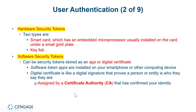Hardware security tokens can be a smart card with an embedded microprocessor that gets powered when plugged into a reader and has encryption keys on it. Or you can have a key fob that generates a code every minute that you must type into the device you're logging into. If you do not physically have that key fob, even though you have the password, you cannot log in.